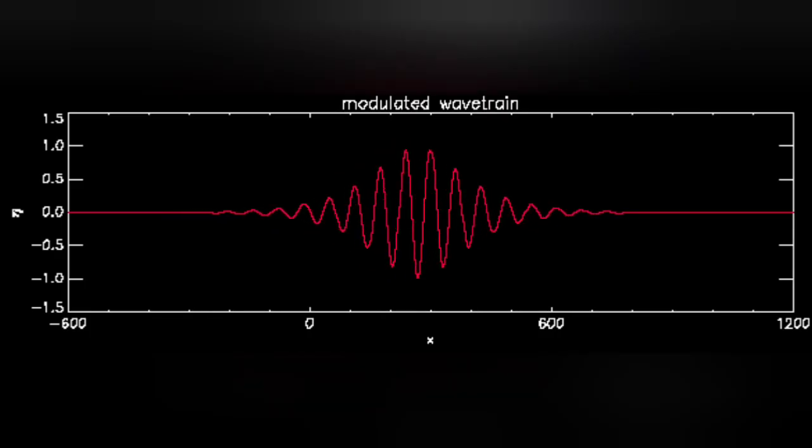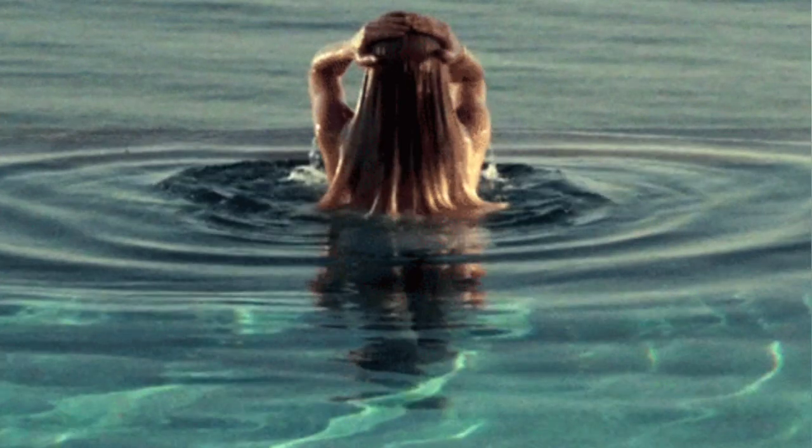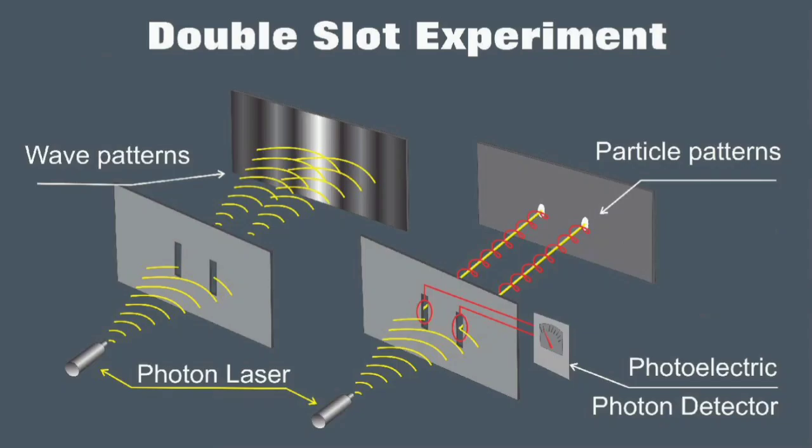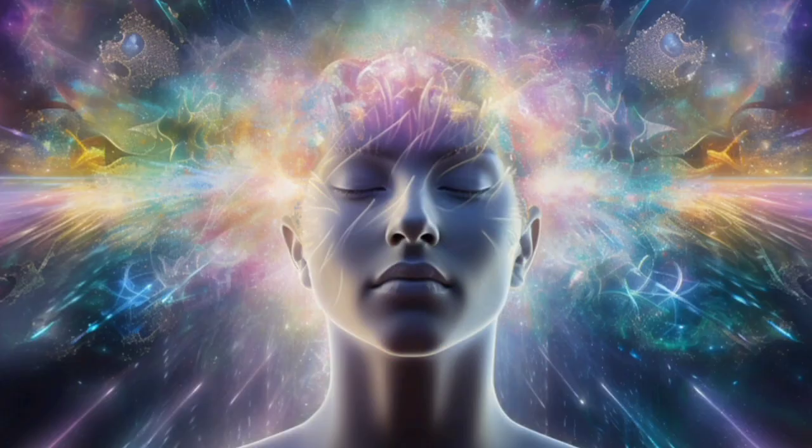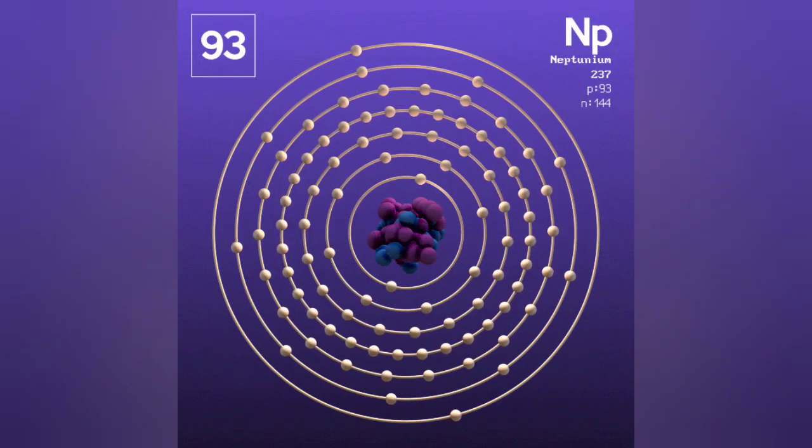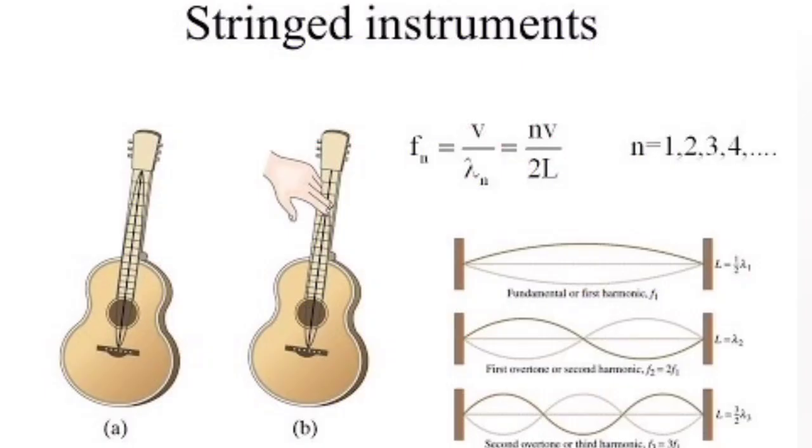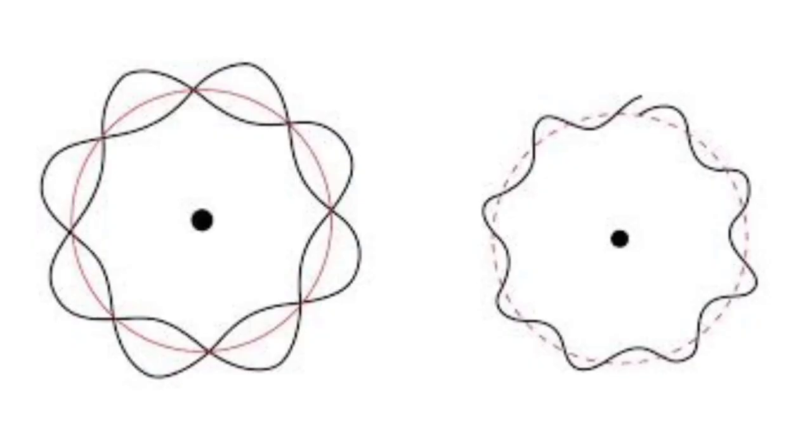Enter Louis de Broglie, a physicist who proposed a radical idea in 1924. What if electrons weren't just particles but also behaved like waves? It's one of the most counterintuitive concepts in quantum mechanics—the idea of wave-particle duality. Essentially, subatomic particles can exhibit both wave-like and particle-like properties depending on how we observe them.